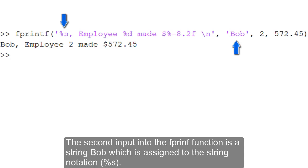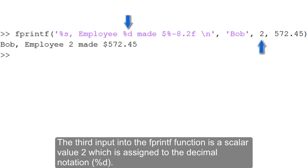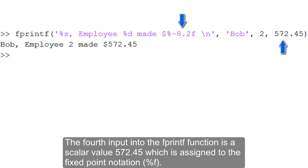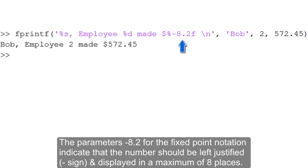The second input into the fprintf function is a scalar value 2, which is assigned to the decimal notation. The fourth input is a scalar value 572.45, which is assigned to the fixed point notation. The parameters negative 8.2 for the fixed point notation indicate that the numbers should be left justified and displayed in a maximum of 8 places.